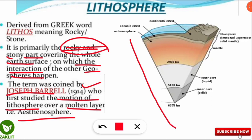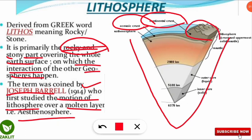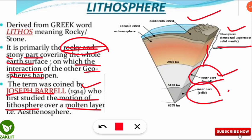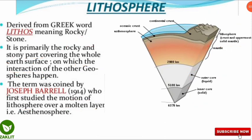Joseph Barrel was the first to study the motion of the lithosphere over a molten layer called the asthenosphere. The cross-section of the earth shows the crust is divided into two types: continental crust, found on the continents, and oceanic crust, found under the oceans. The lithosphere consists of both the oceanic and continental crust plus the uppermost solid part of the mantle. The core has two parts: the outer core, which is liquid, and the inner core, which is solid.